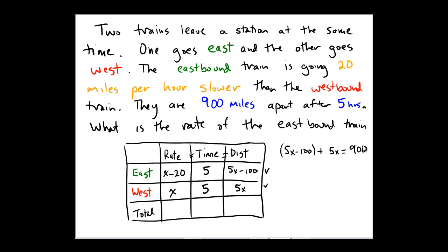This gives us the equation we can use to solve. We'll do some algebra: 5x minus 100 plus 5x. Collecting like terms gives us 10x minus 100.